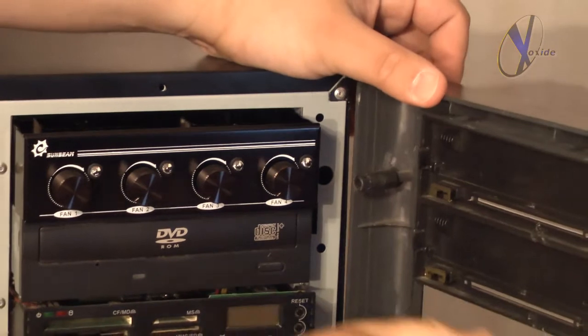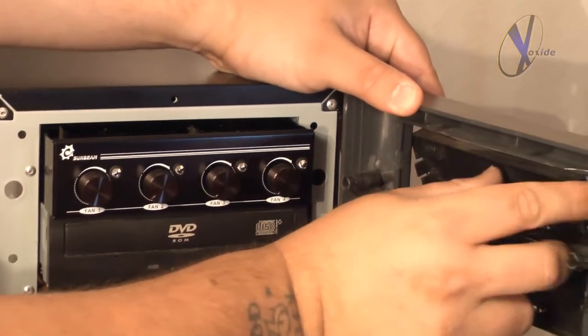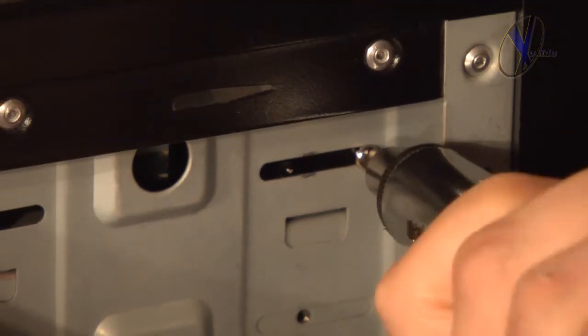Remember, if you're installing this on a previously unused bay, you may have to pop off the front covering. Now screw it in and close the front panel.